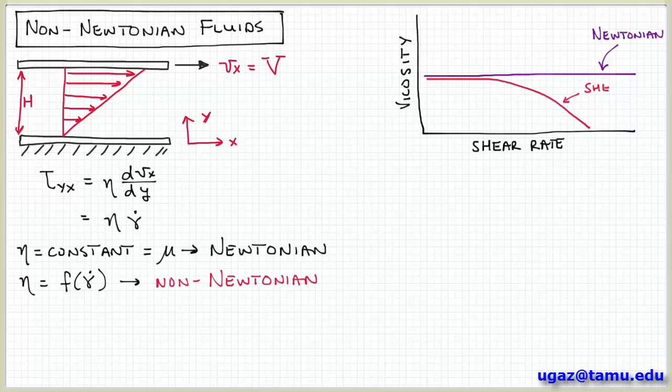Another case that we could have is where this viscosity value decreases as a function of shear rate. So as you apply sharper velocity gradients or faster flows in general, you may observe the viscosity to decrease. And if that's the case, then this is referred to as shear thinning behavior.